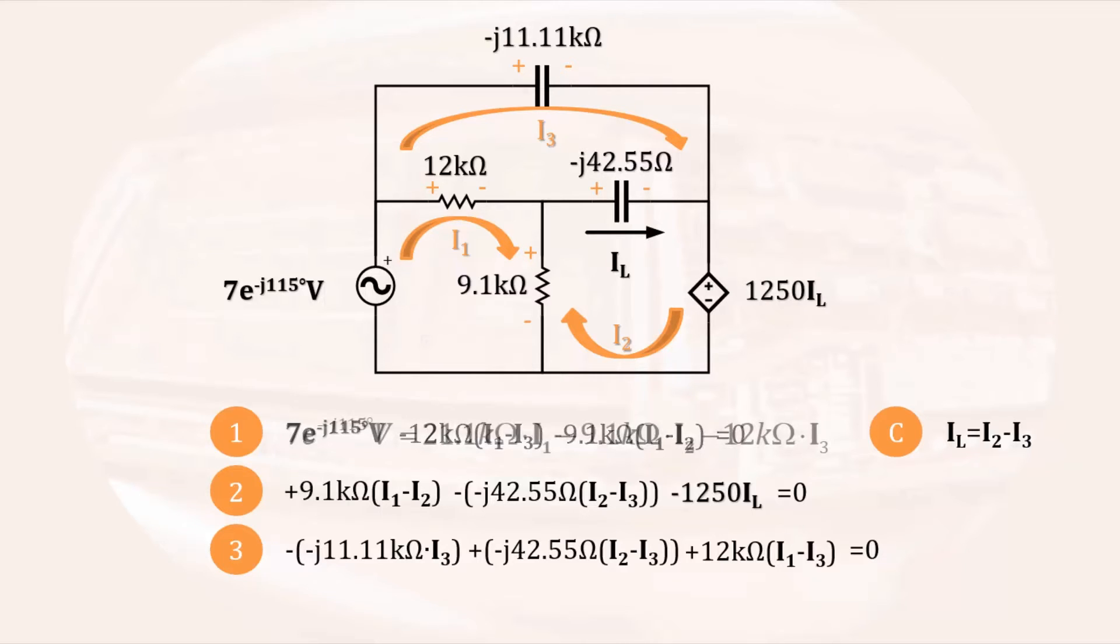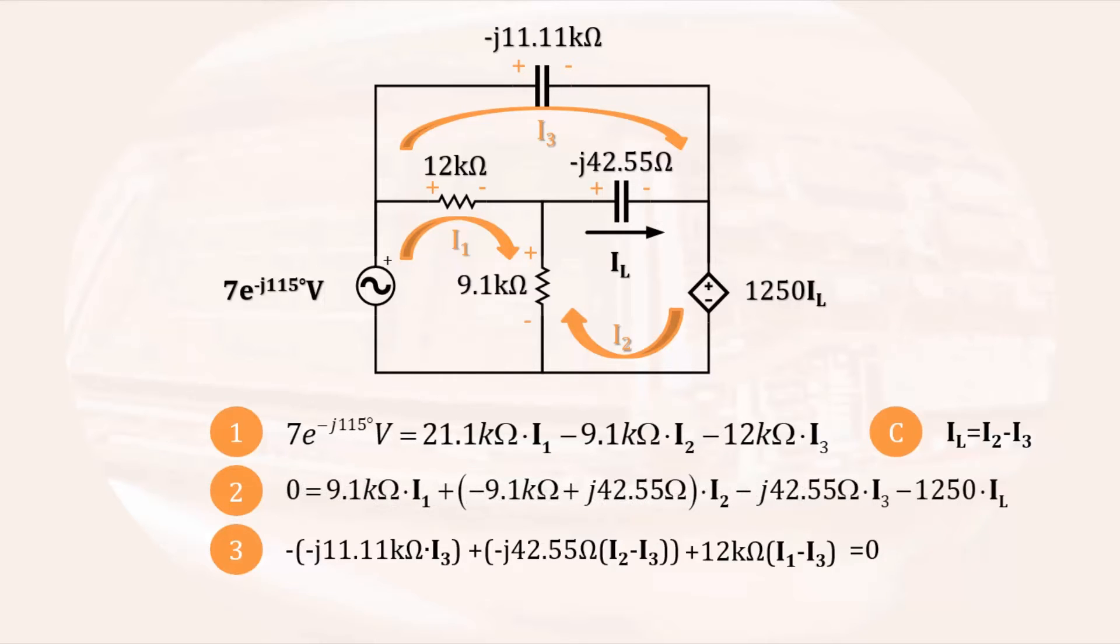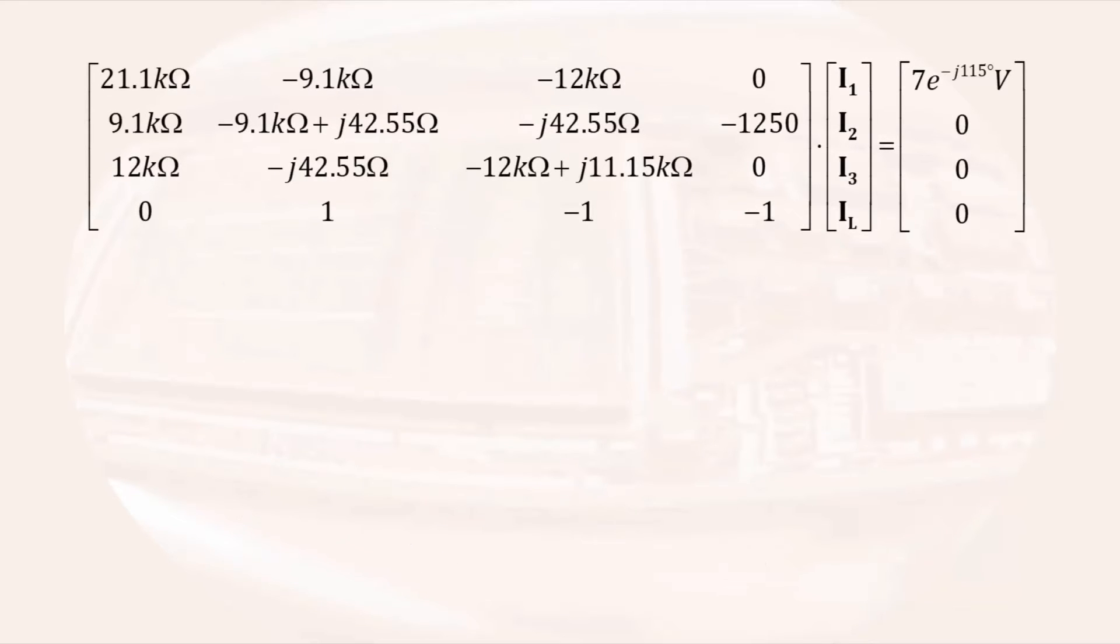Rather than risk algebra, let us arrange each of the equations for direct entry into a matrix. The resulting matrix for this 4x4 system of equations is this. It's probably a good idea for you to stop and check each of the coefficients at this point to verify them for yourself. Assuming we have done that, solving the matrix gives us these four currents.